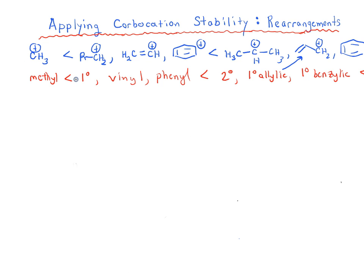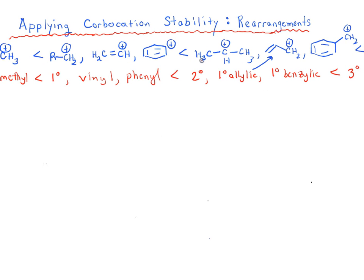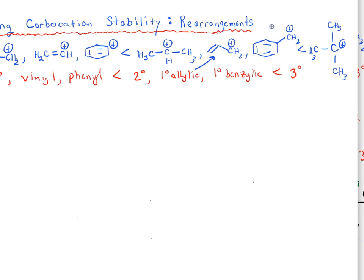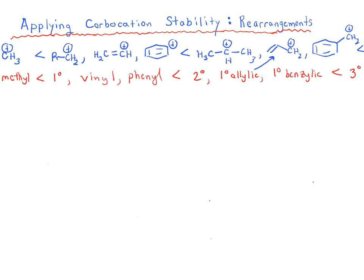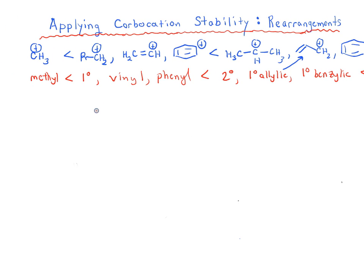On the far left-hand side of our stability scale we have methyl carbocations — these are the least stable — then we go to primary, which are about the same as vinyl and phenyl carbocations. Those are less stable than secondary carbocations, which are about the same as primary allylic or primary benzylic carbocations. At the end of the scale we have tertiary, so tertiary carbocations are the most stable.